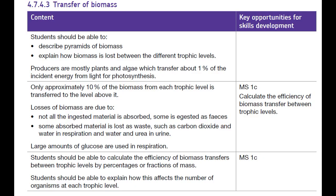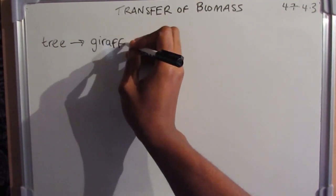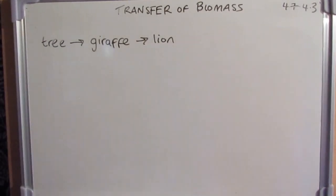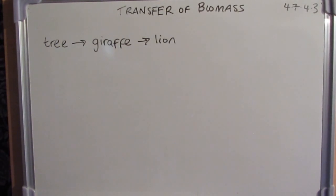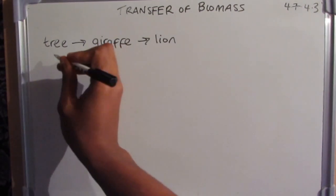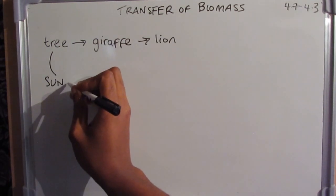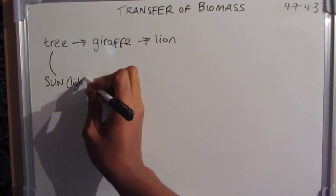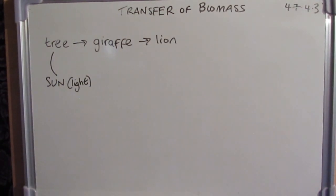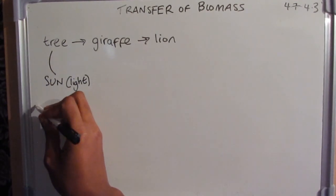Our last section is the transfer of biomass. Going back to tree, giraffe, and lion — the arrows represent the direction of energy transfer. Now that we know what biomass means, we can say it is actually the transfer of biomass between each trophic level. We need to think carefully about how much biomass is transferred between these levels.